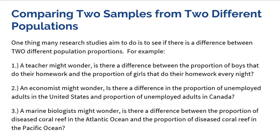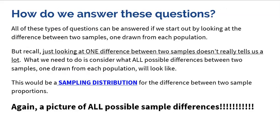In the previous topic, we were looking at one population. Now we're wondering about the difference between two. Any time you compare two things, you look at the difference. These questions can be answered by looking at a difference between two samples, one drawn from each population. For example, if we get a proportion of girls and it comes back that 50% do their homework, and the proportion of boys comes back at 45%, that's a 5% difference.